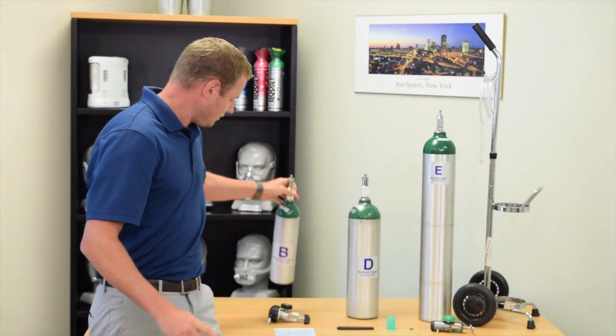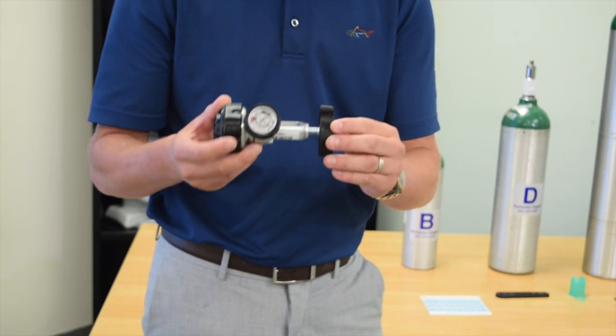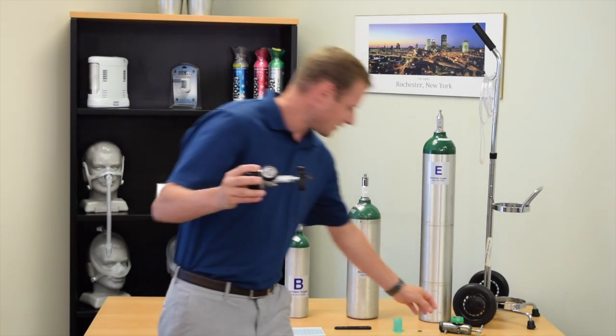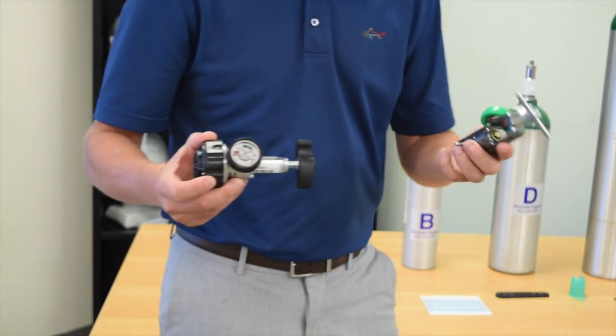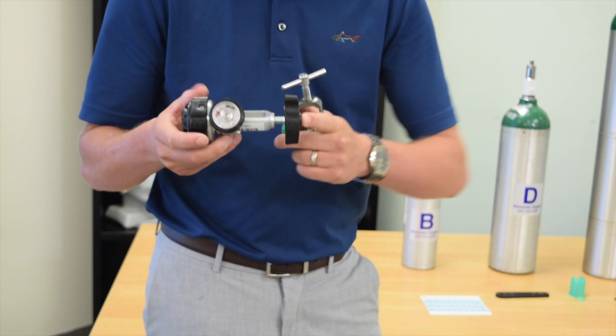The conserving device, which looks just like this, is a special type of regulator used with the smaller style tanks. It is a little different than the standard oxygen regulator. This device is typically prescribed to you by your doctor.